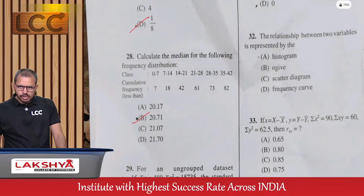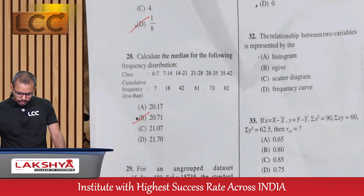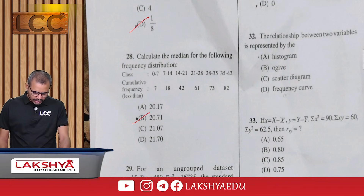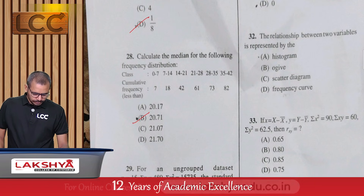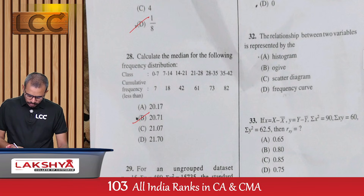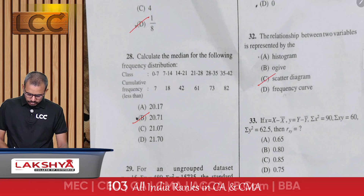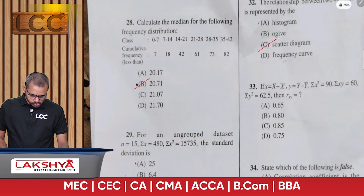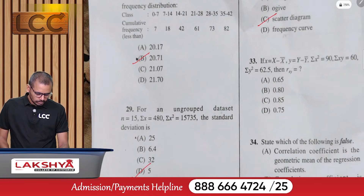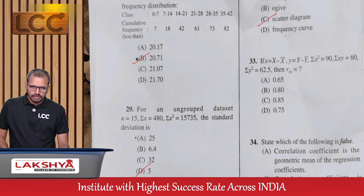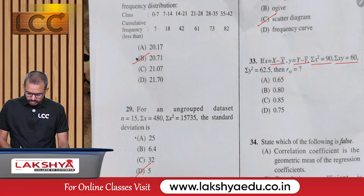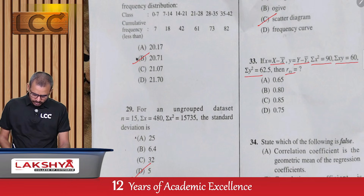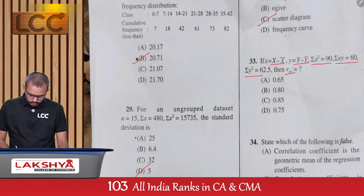Question 32: The relationship between two variables is represented by — correlation, using a scatter diagram — option C. Question 33: Given small x = X - X̄, small y = Y - Ȳ, and values of Σx², Σxy, Σy² are given, find the correlation coefficient r — option B.